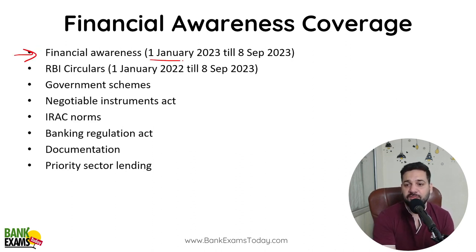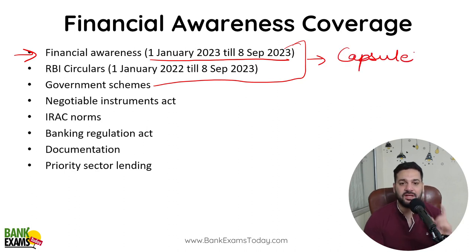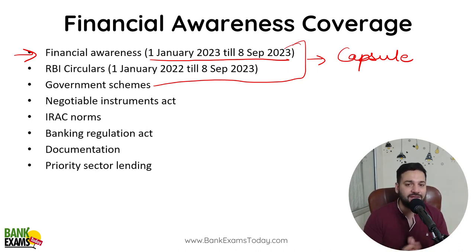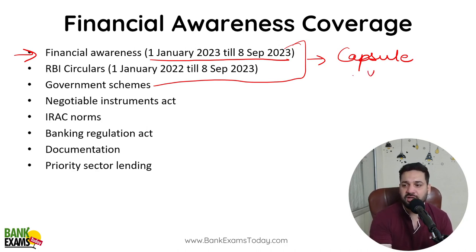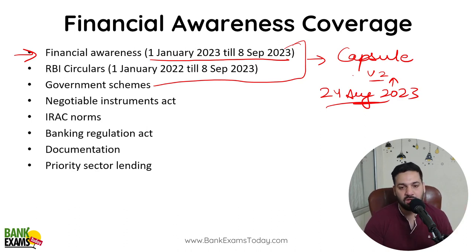First of all, for Financial Awareness — from 1st of January till 8th of September 2023 — these are the most important topics. Just cover the capsule. The capsule has all Financial Awareness content: MOUs, summits, conferences, awards and honors, committees, and government schemes — everything in one place. That's a 250-page capsule; V2 is already out with updates till 24th August 2023. We will also be releasing V3, adding updates till 7th or 8th of September.